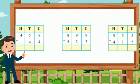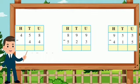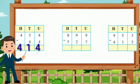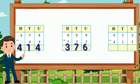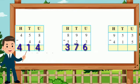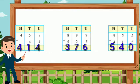Next, 458 minus 44 is equal to 414. Next, 899 minus 523 is equal to 376. 955 minus 415 is equal to 540.